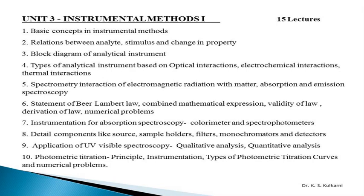Unit 3 is Instrumental Methods 1. Here you have to learn about basic concepts of instrumental methods — relations between analyte, stimulus and change in property, block diagram of any analytical instrument, and various types of analytical instruments based upon optical interaction, electrochemical interaction and thermal interaction. A very important part is spectrometric interaction of electromagnetic radiation with matter — absorption and emission spectroscopy, then the statement of Beer-Lambert law, its combined mathematical expression, validity of the law, derivation and numerical problems.